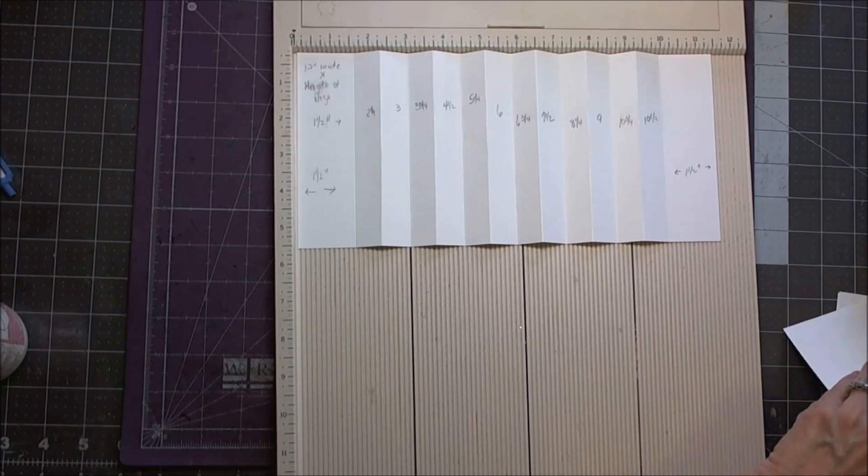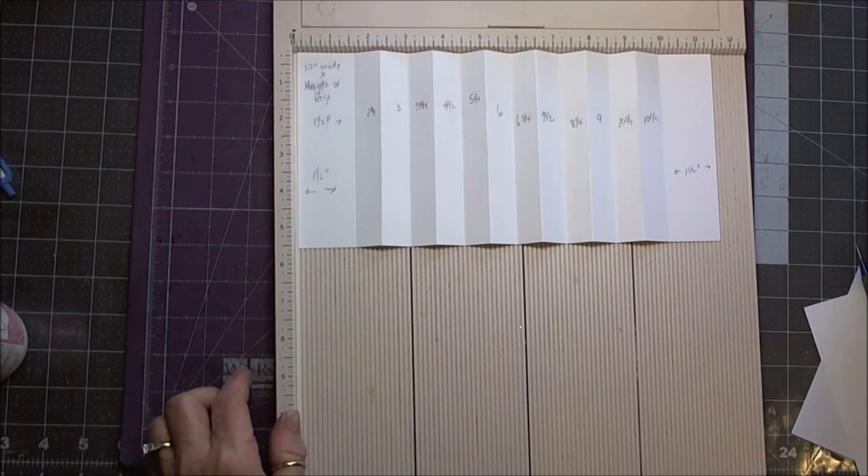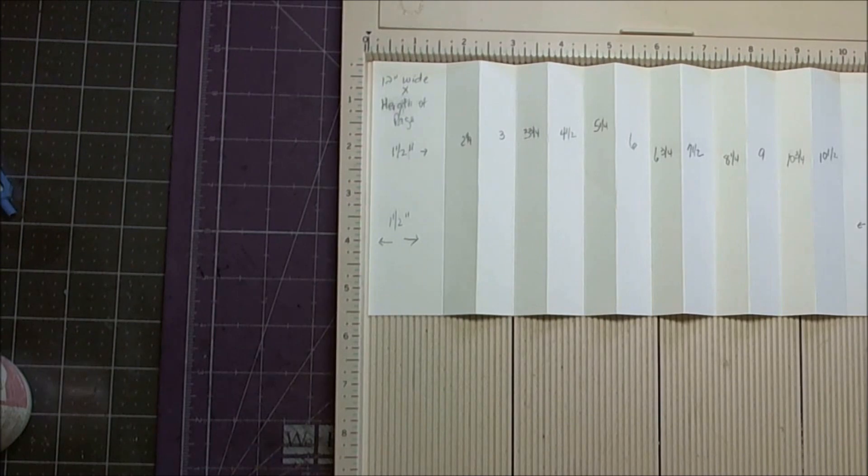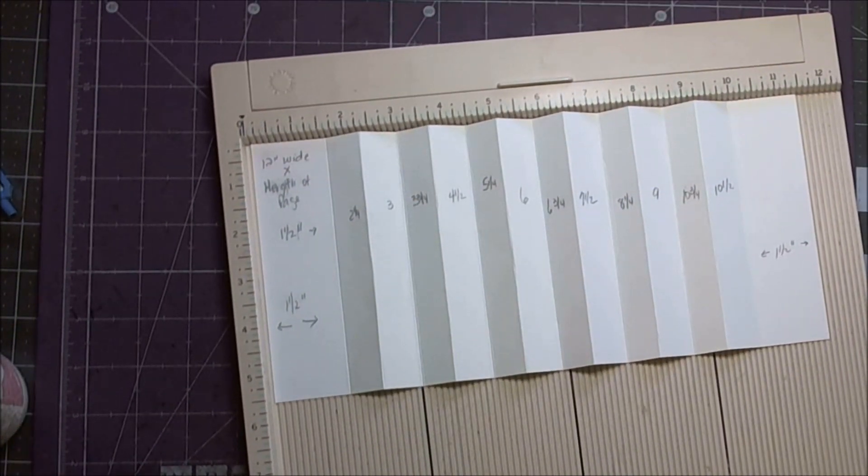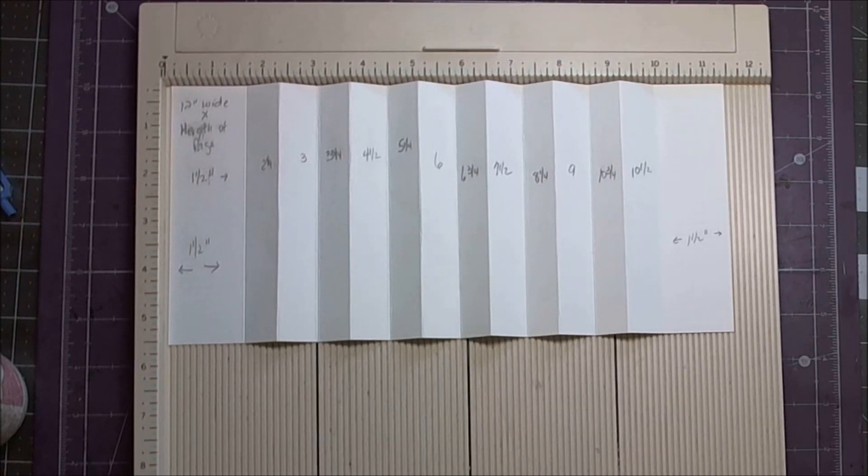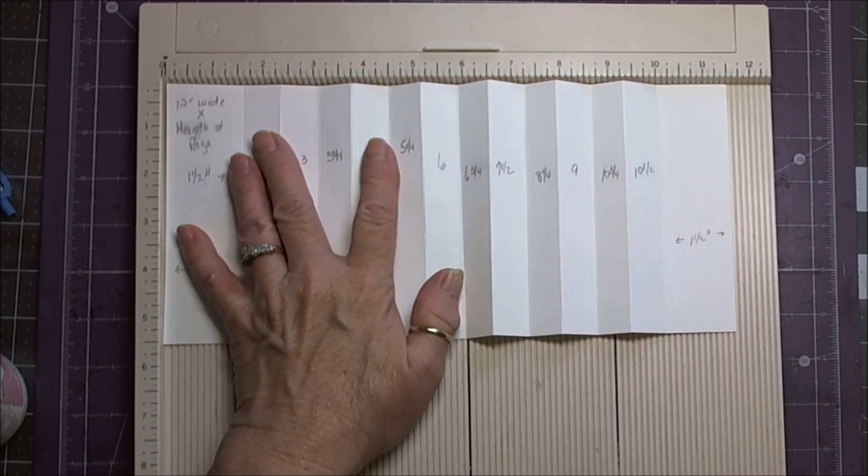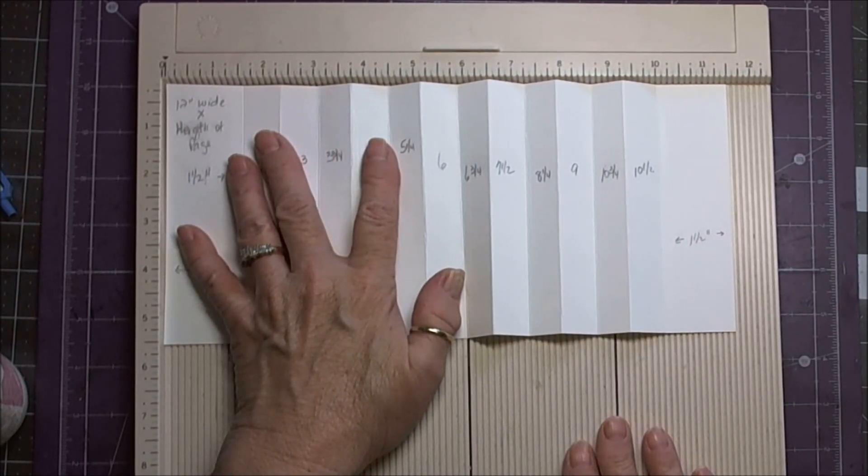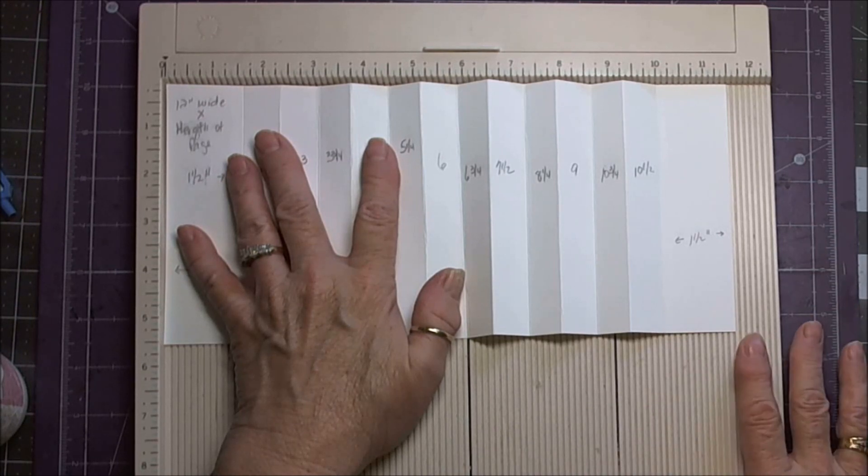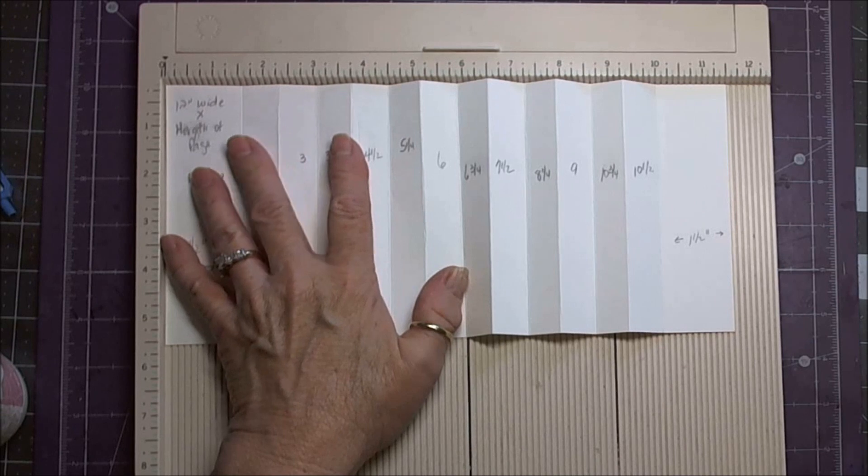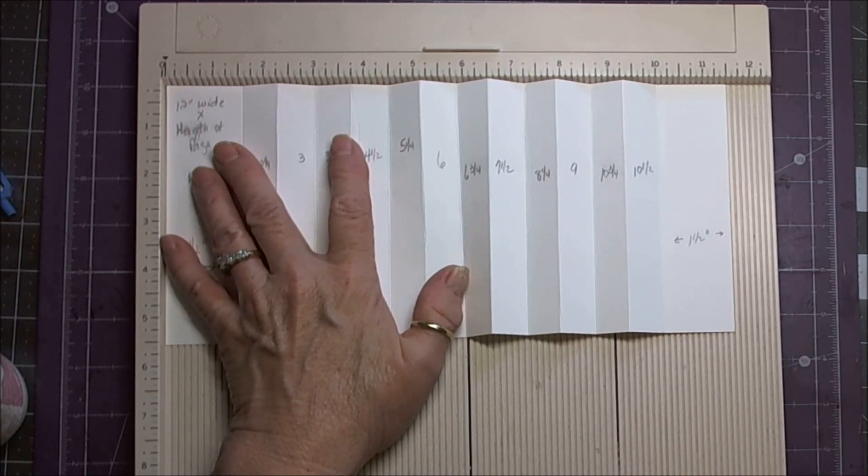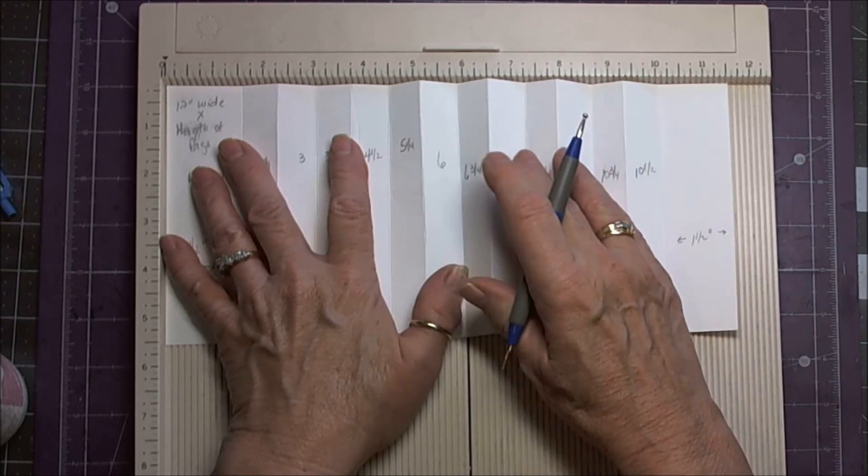And then it's just a matter of scoring. Let me move the camera in so you get a closer view. Now if you don't have a scoreboard you could do it anyway. Grab a ruler and your bone folder and do basically the same thing. A scoreboard is a great tool to add to your arsenal, but if you don't have the funds or you don't have it, you can still make a mini.